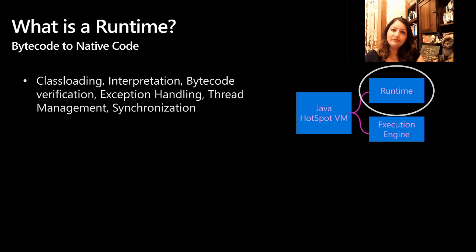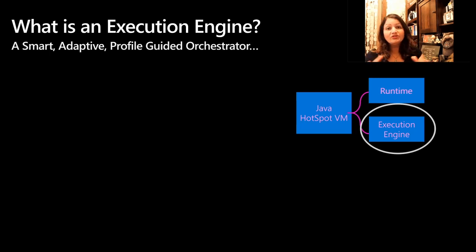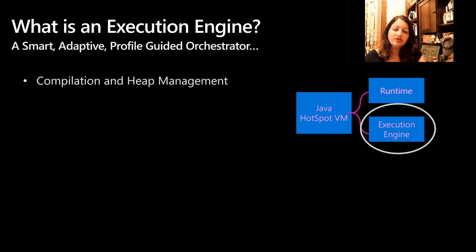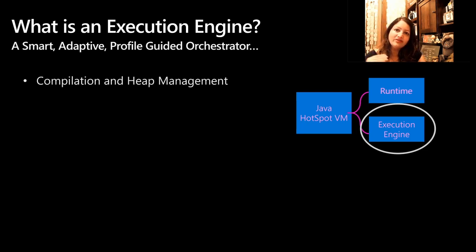Our changes with respect to runtime were in JVM construction and destruction, and we wanted to make sure it understands the structured exception handling needed for Windows. Next, the execution engine includes your JIT compilers and memory management units. Hotspot has two JIT compilers: C1, also known as the client compiler, and C2, known as the server compiler. Hotspot provides tiered JIT compilation with various stages of profile-guided optimization before reaching C2. Many of our changes were to enable ARM64-specific, Windows-specific, and Windows ARM-specific behavior.